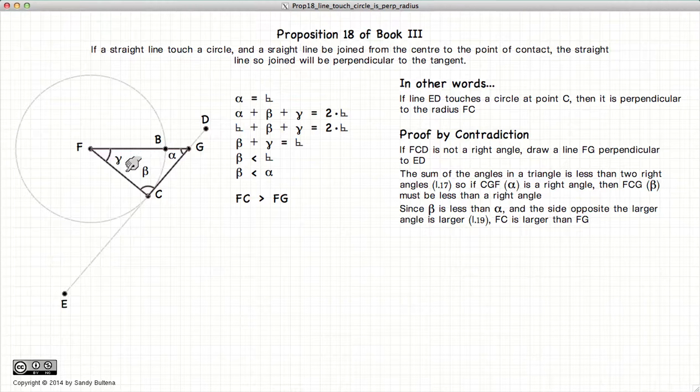Again, alpha is larger, so FC would be larger than FG. So FC will be greater than FG.